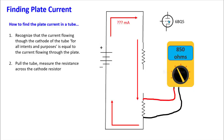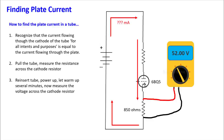Here's how to do it: to be safe, pull the tube. Then measure the resistance across the cathode resistor. Find your schematic, find the pinout for the 6BQ5, identify which pin is the cathode, put your positive lead on that pin, find the resistor going to ground, and measure the other side. In this case we measured 850 ohms.